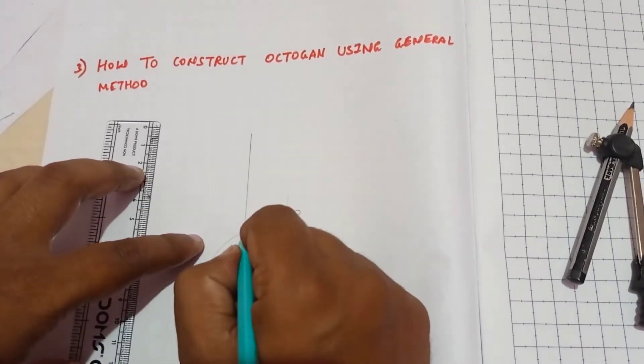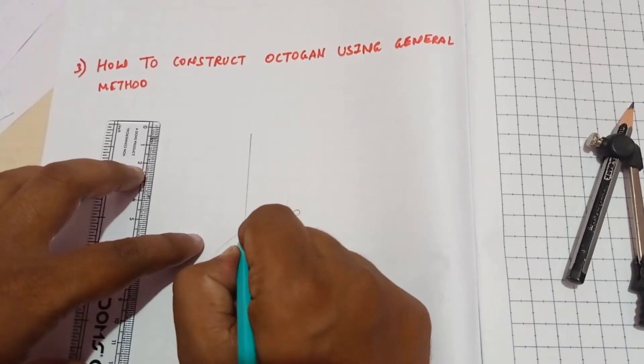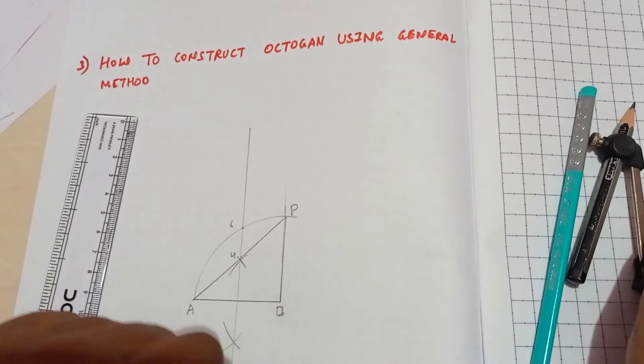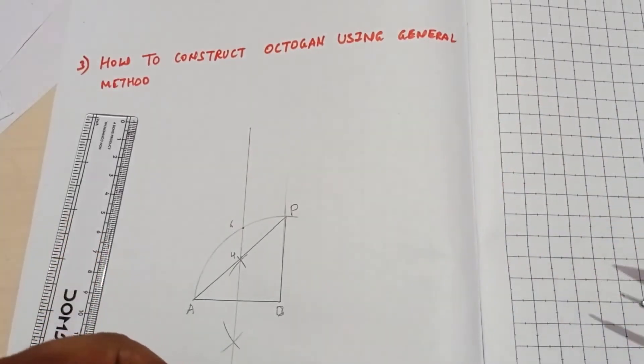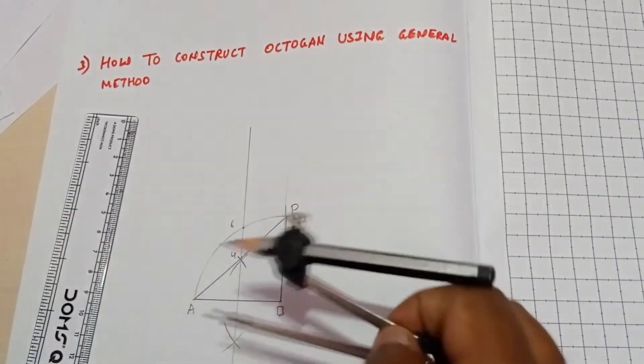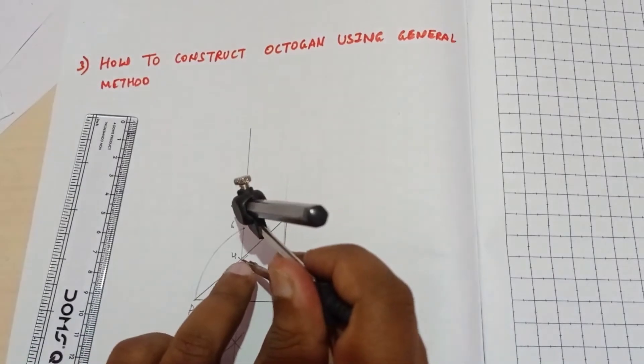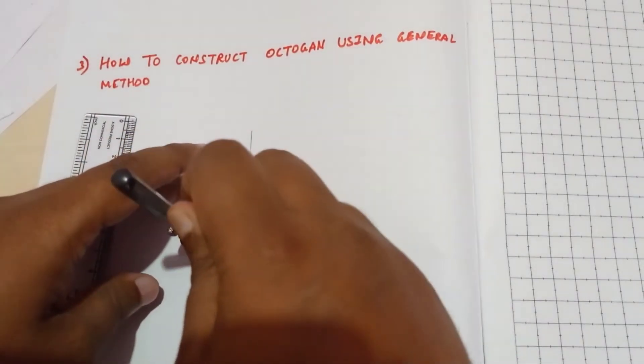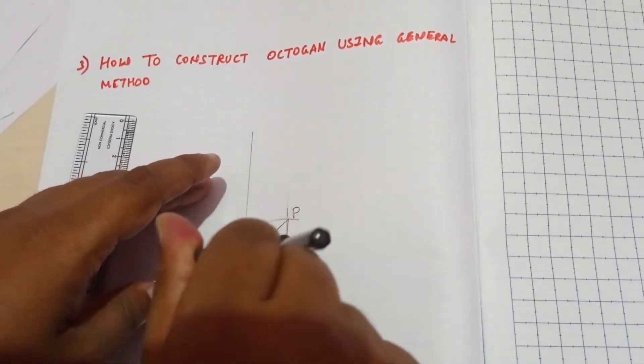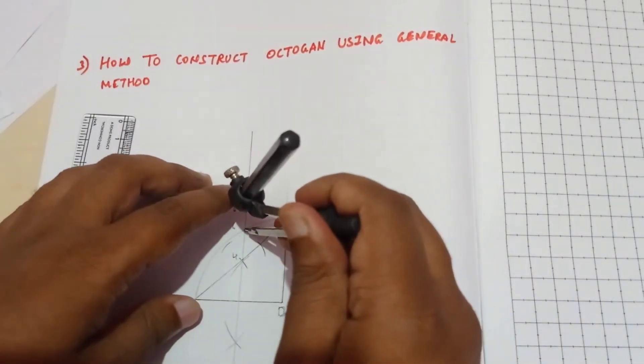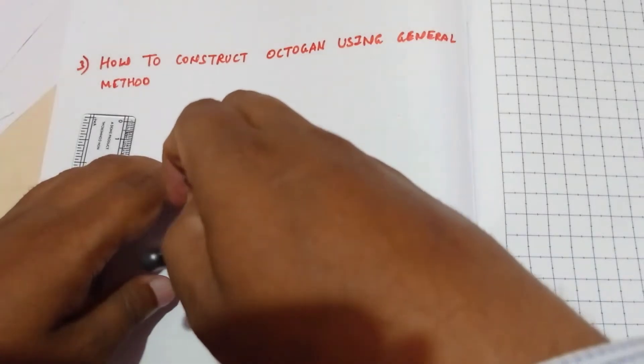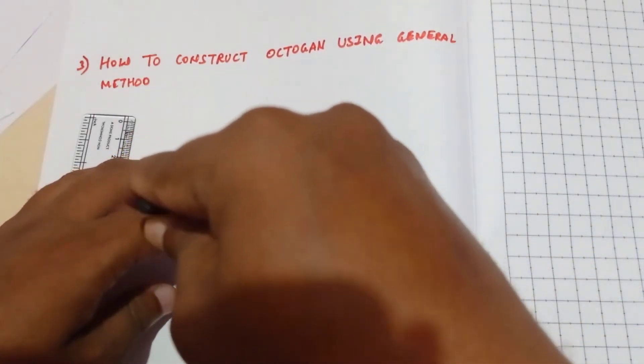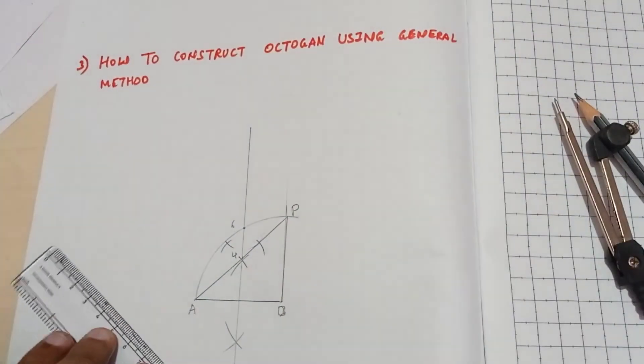Here you need to assume this point as 4 and this point as 6. Now you have to bisect to find out point number 5. You have to bisect this small line. To bisect it, take more than half the distance and draw an arc. Now draw a horizontal line here.